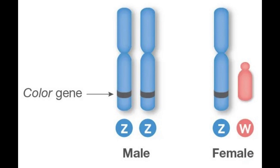Female pigeons have one Z chromosome and one W chromosome, so they have just one copy of the color gene. Male pigeons have two Z chromosomes, so they have two copies. Because it's on a sex chromosome, we say the color gene is sex linked. Sex linked genes follow different patterns of inheritance in males and females.